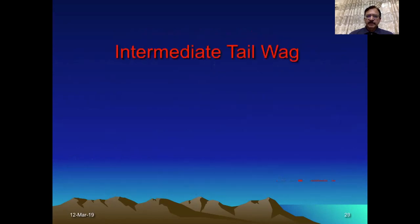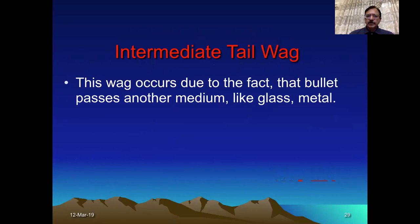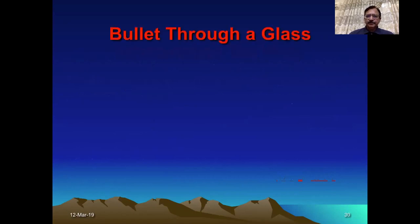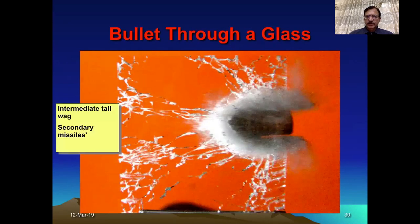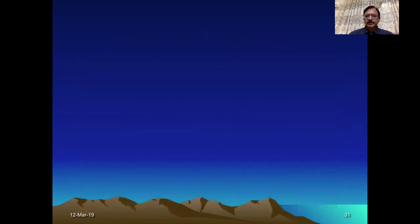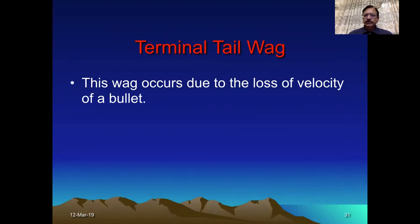Then the intermediate tail wag — when the bullet enters into another medium, it again wags and becomes unstable. This occurs when the bullet strikes glass, metal, or any other material. Then the terminal tail wag is shown terminally when the bullet has reduced its velocity and again becomes unstable.